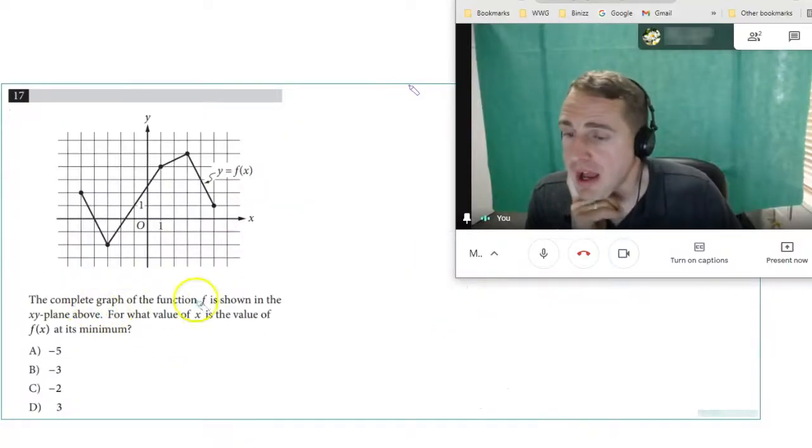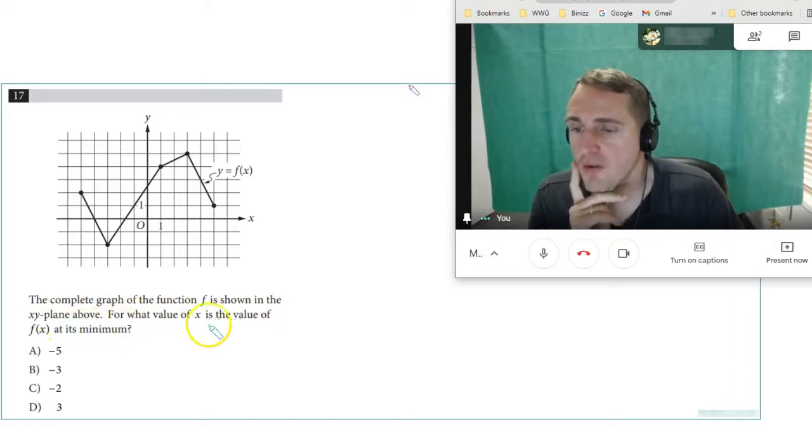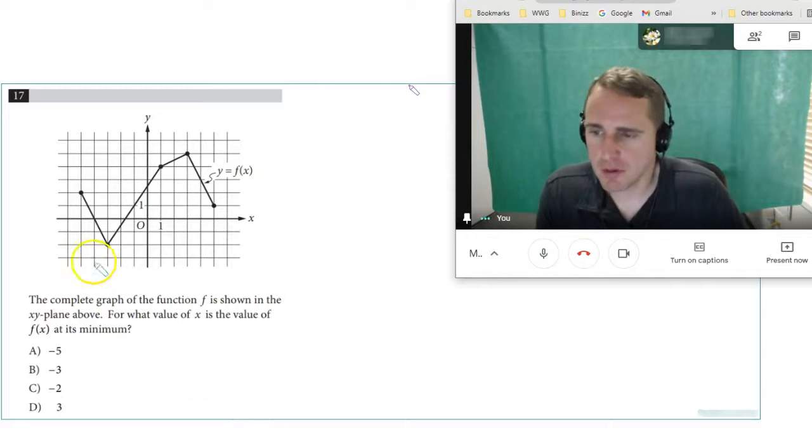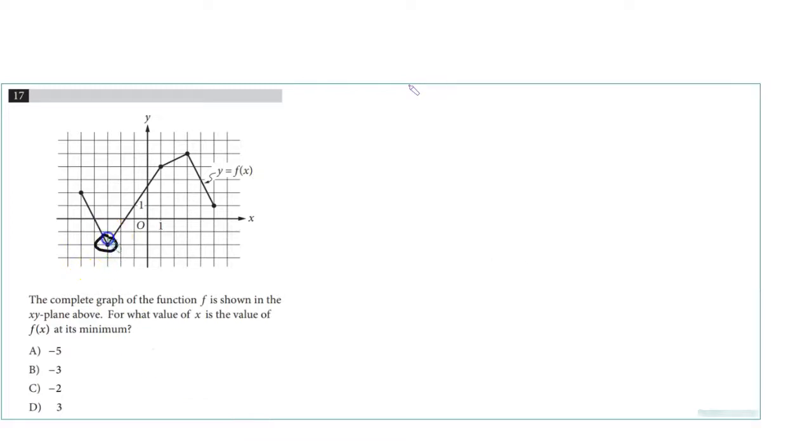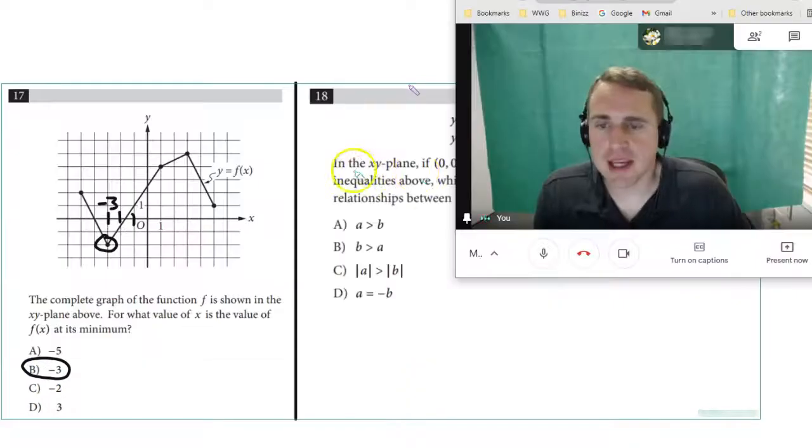Number 33: A complete graph of the function f is shown in the xy-plane above. For what value of x is the value of f(x) at its minimum? This is the minimum, right? So isn't that x equals negative 3? That's pretty easy in my opinion.